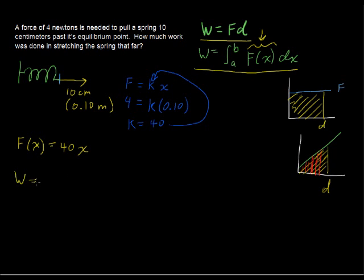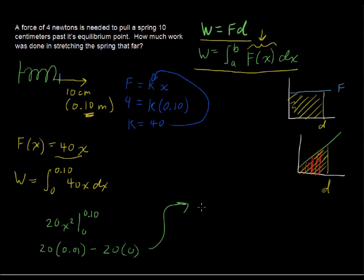So now we can put this all together and plug this into this work formula, and the work performed equals the integral from 0 to 0.1 meters. And the integral of what? It's the integral of the force function, 40x dx. Taking the antiderivative of that, we get 20x squared, evaluated from 0 to 0.10, and that equals 20 times 0.01 minus 20 times 0, which then equals 20 times 0.01 is 0.2, so 0.2 newton meters.